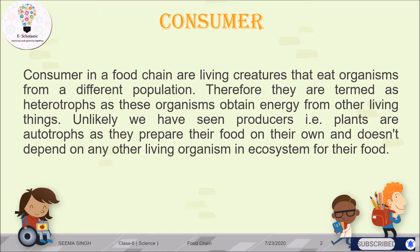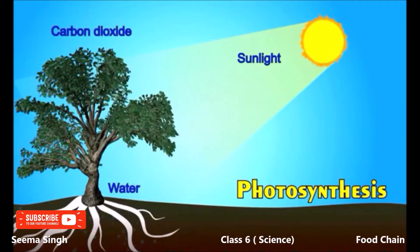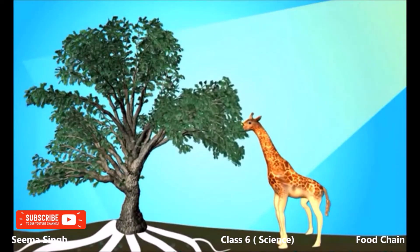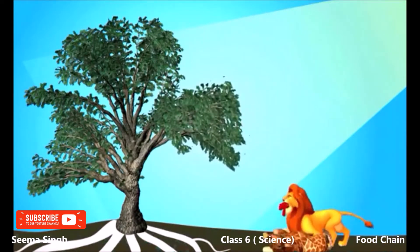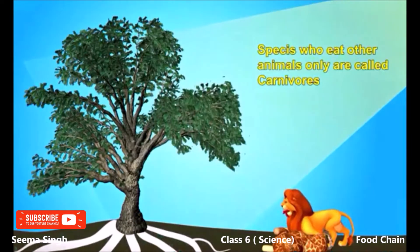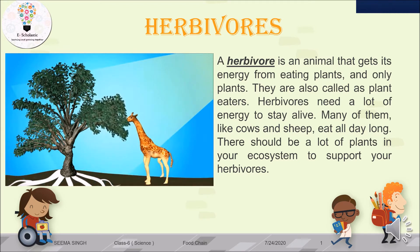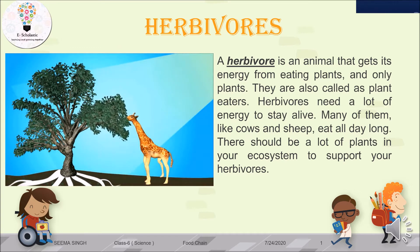In the video, we saw that plants make their own food. Then a giraffe comes and eats the plant — species that only eat plants are called herbivores. Then a lion comes, attacks the giraffe, kills it, and eats it — species that eat other animals are called carnivores. So in this activity, the giraffe and the lion are both consumers, since they consume food from other living organisms.